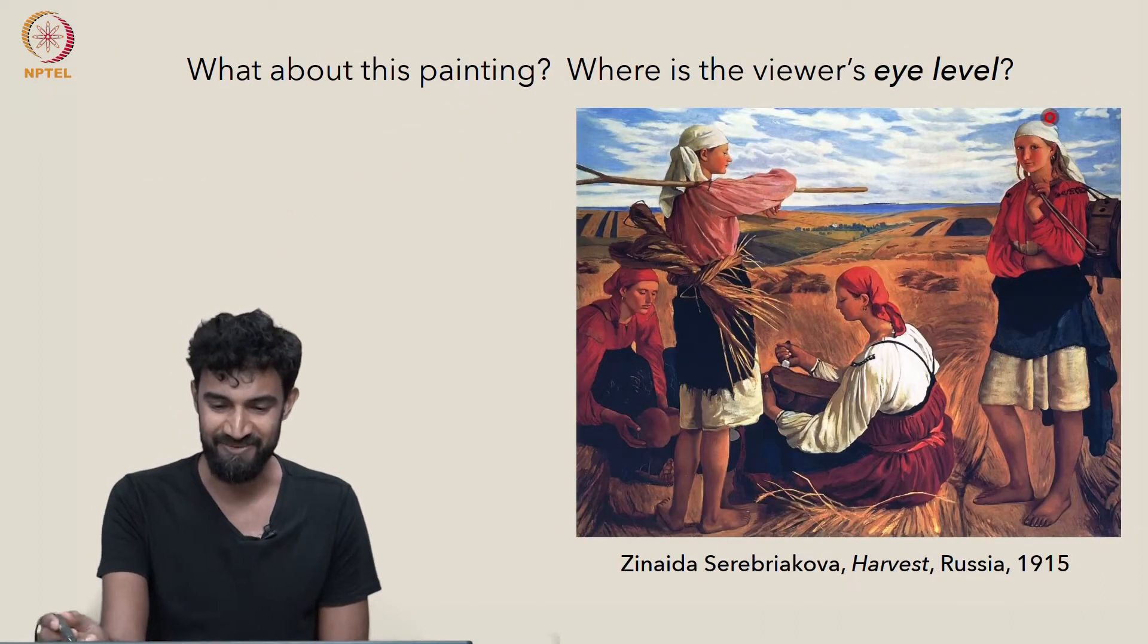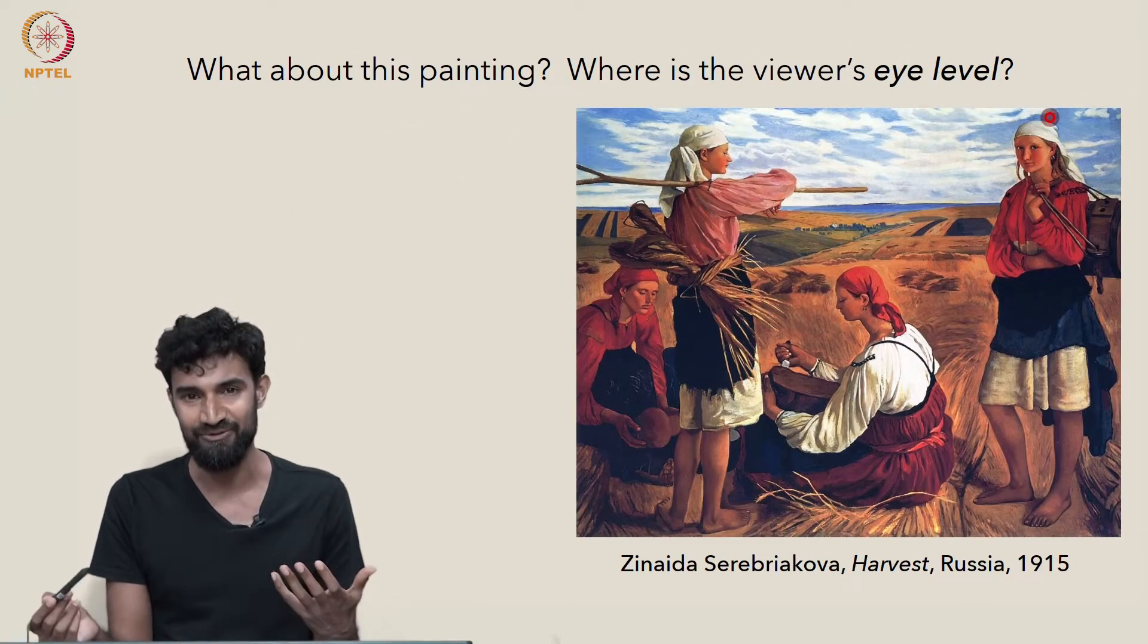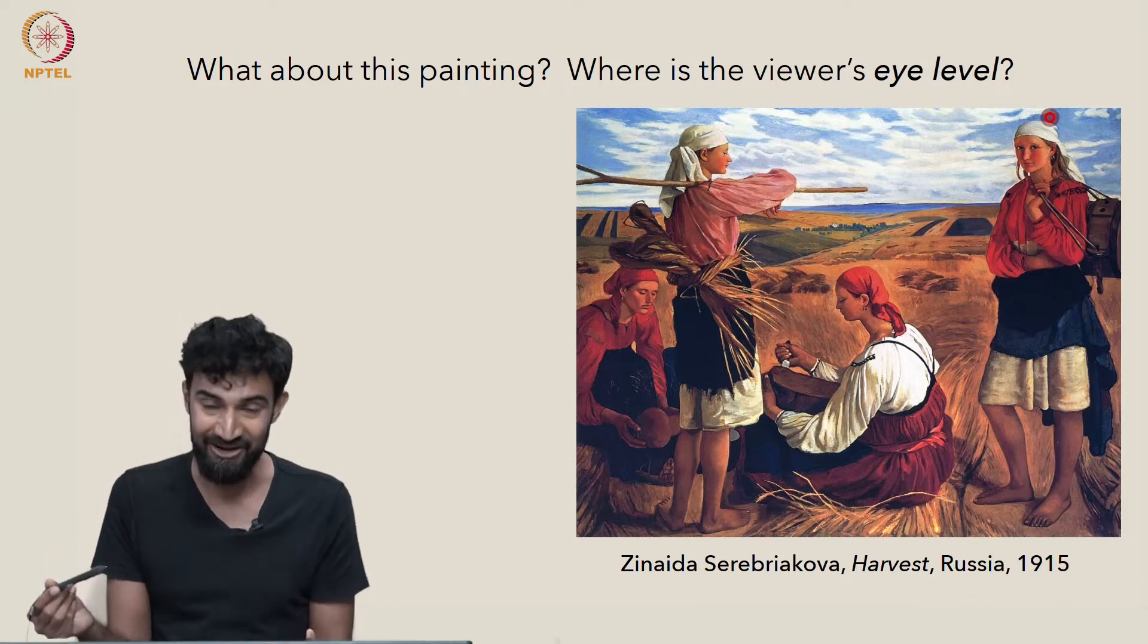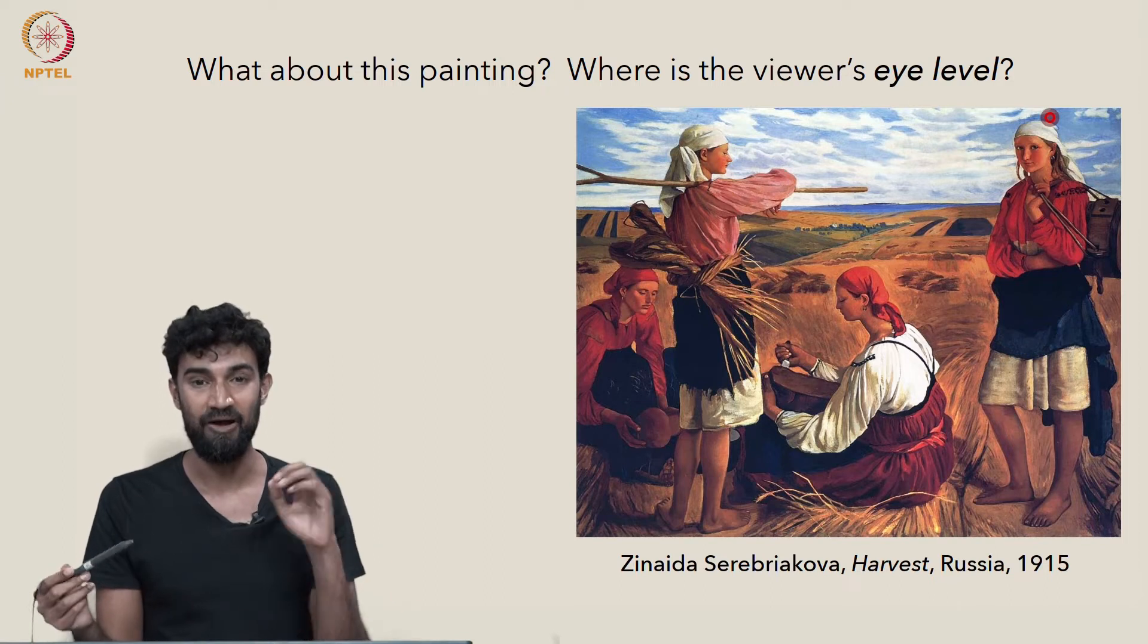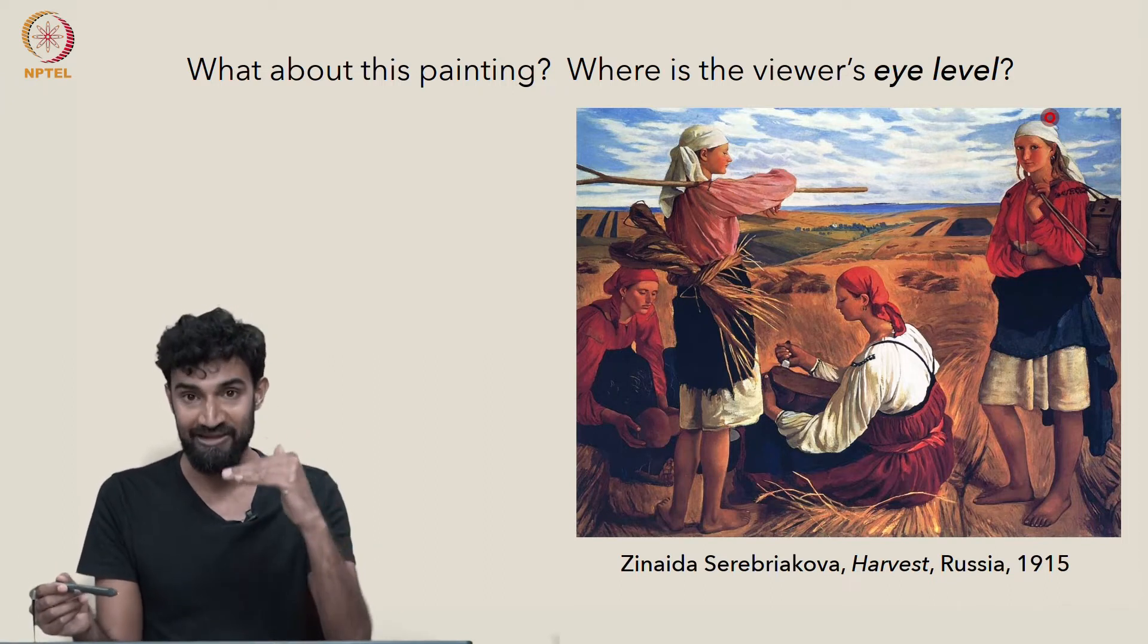Or what about this painting? Where is the viewer's eye level? This implied observer—are they sitting on a bale of hay, on the ground, are they standing, are they viewing the scene from a window? What's the eye level?